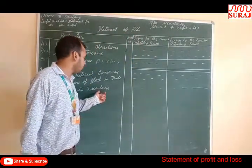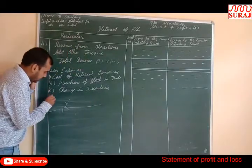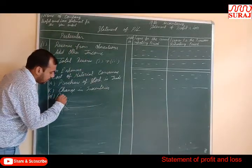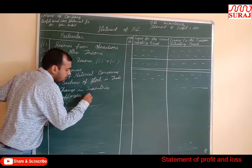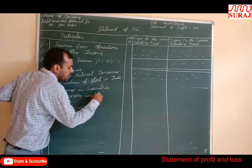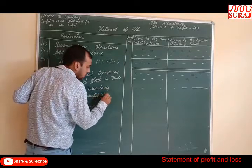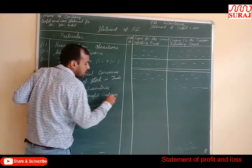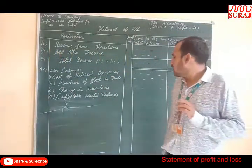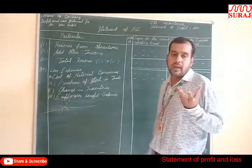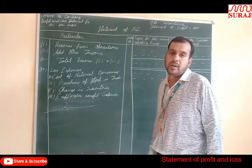D: Employee Benefit Expenses. This includes wages, salary, and medical expenses, along with any other benefits given to employees, etc. All of these are classified as Employee Benefit Expenses.